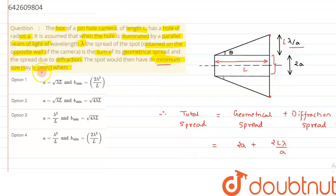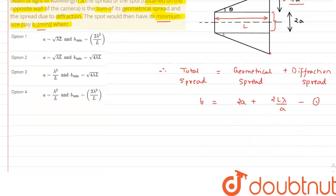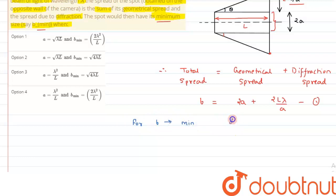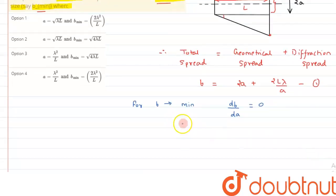The total spread of light is due to geometrical spread plus diffraction spread. Due to geometrical spread, the spread is 2a. So total spread b equals 2a plus 2L lambda upon a. This is our equation number one. To get the minimum value of b we use the concept of maxima and minima, so for b to be minimum, db by da equals zero.